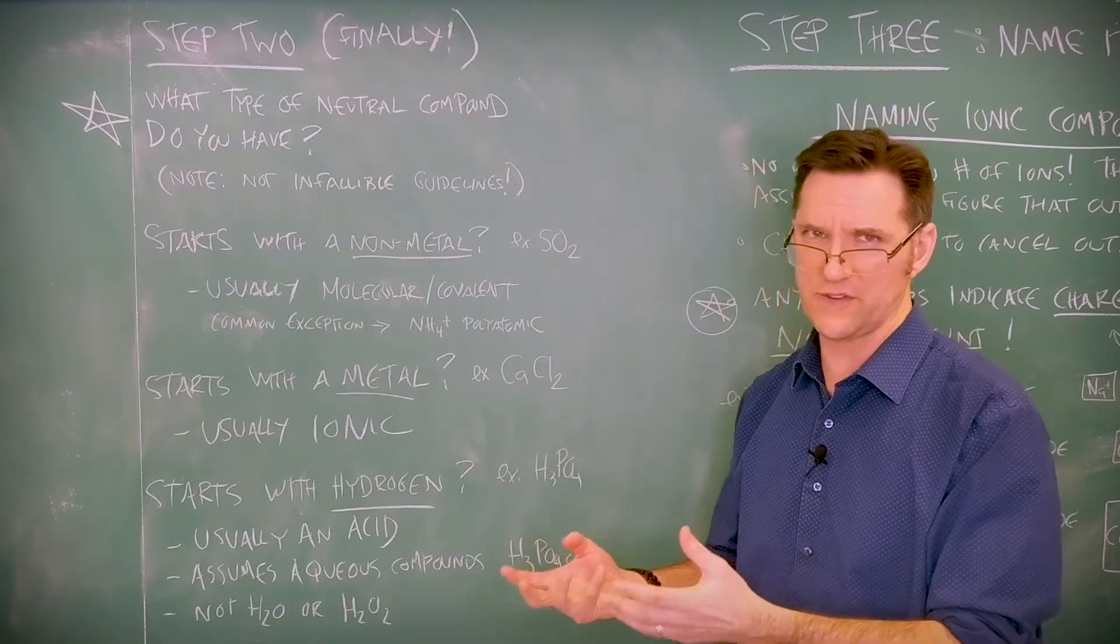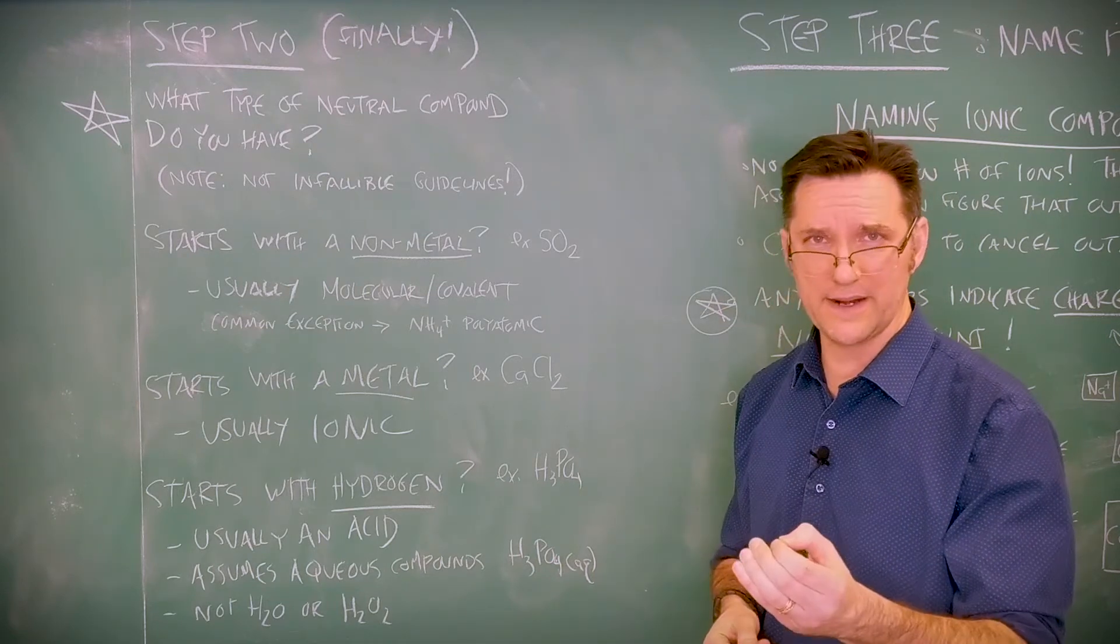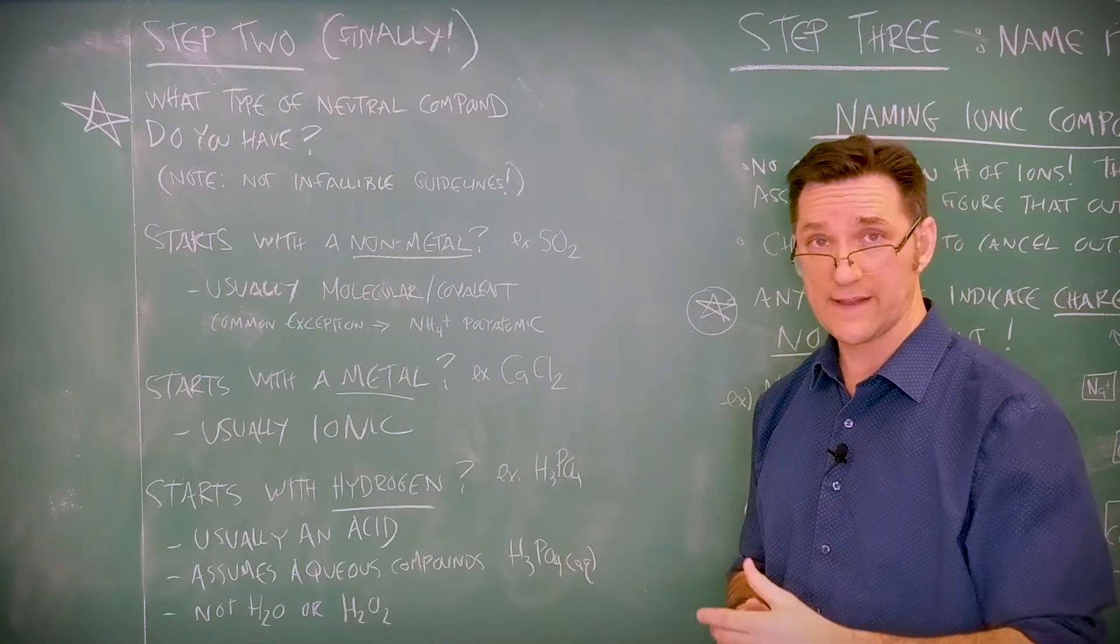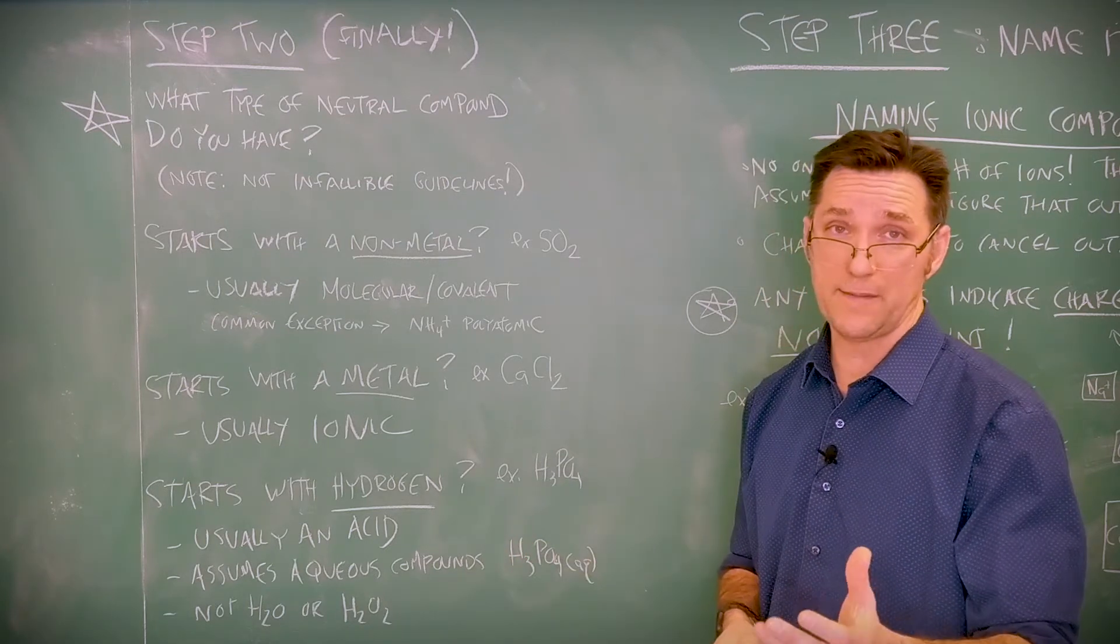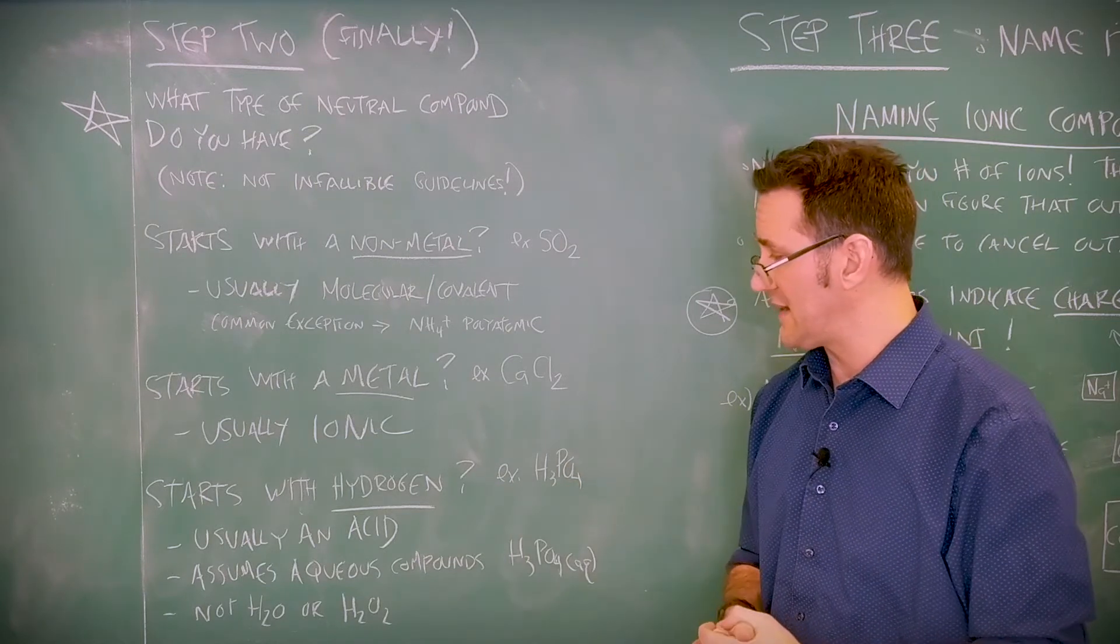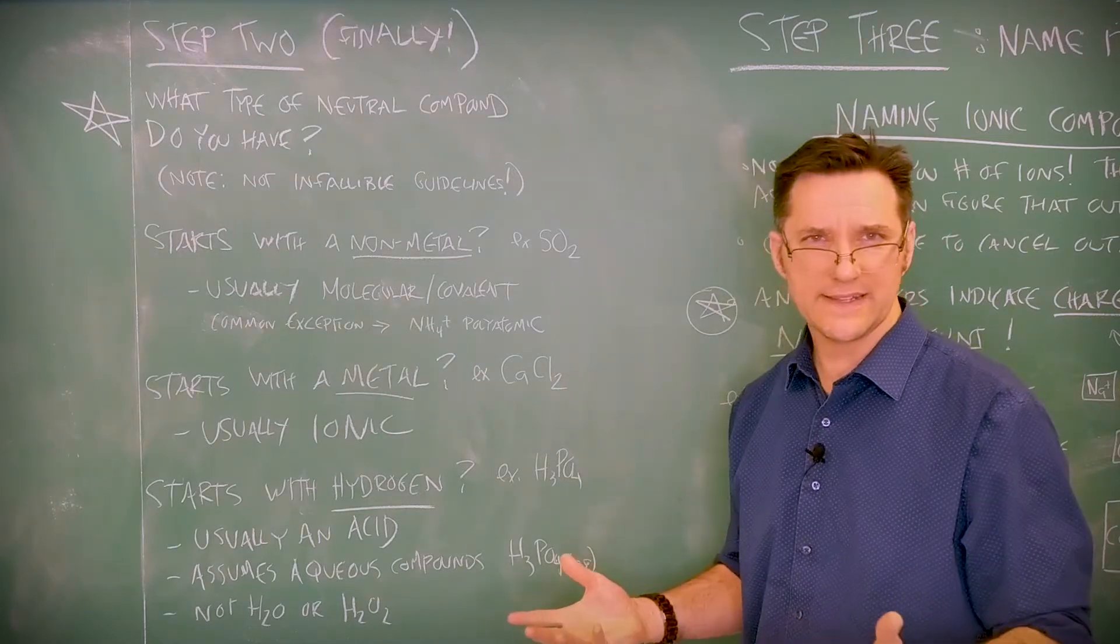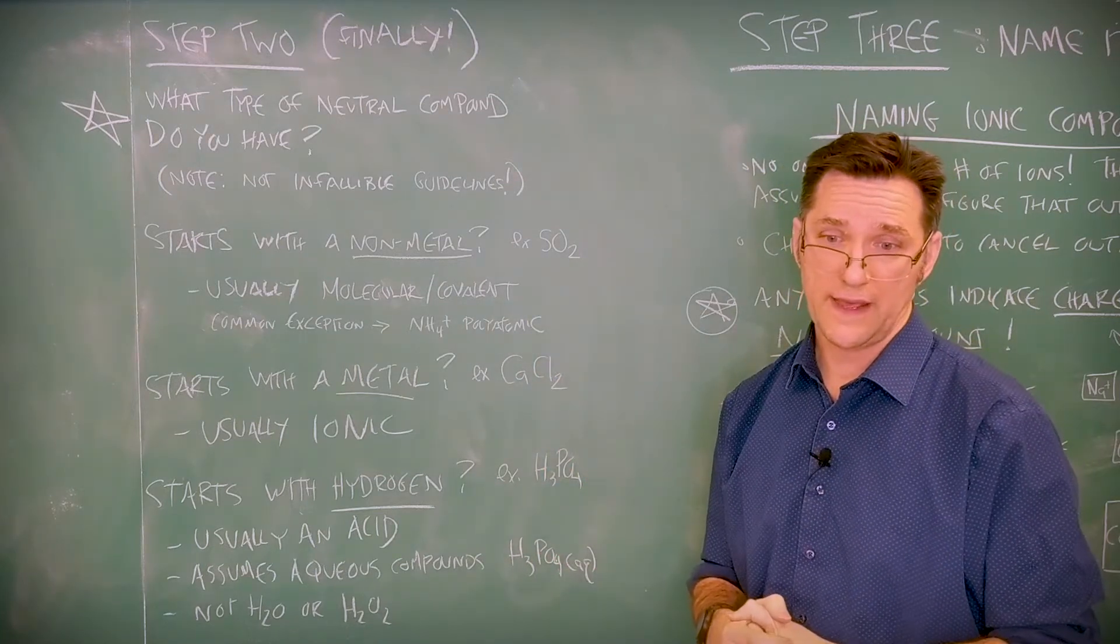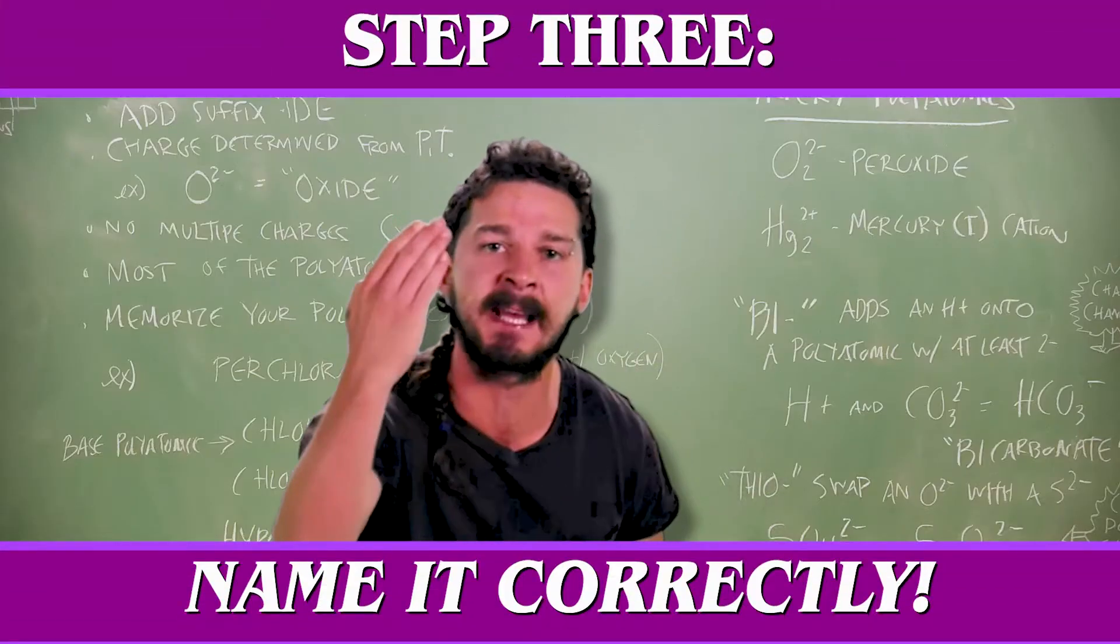So what kind of compound is it? Obviously, we're not talking about elements or allotropes straight off the periodic table. If it starts with a nonmetal, it probably ends with another nonmetal, and that's a molecular or covalent compound. If it starts with a metal, that's an ionic compound. And then finally, if it starts with hydrogen, it's probably an acid. Nothing is impossible.